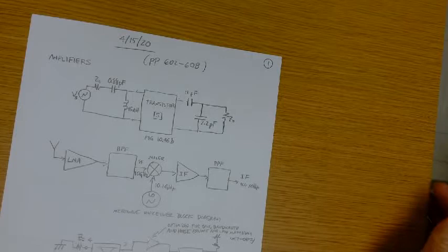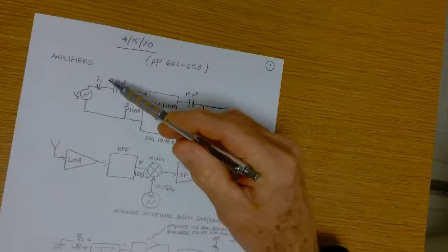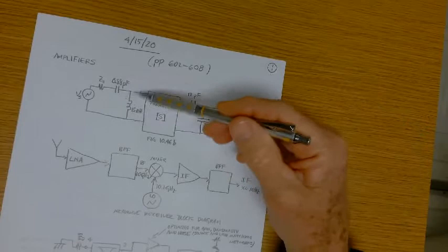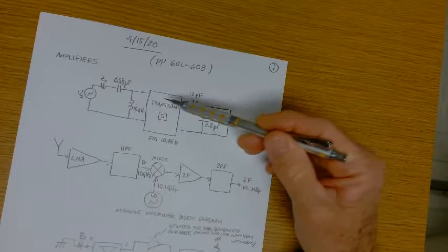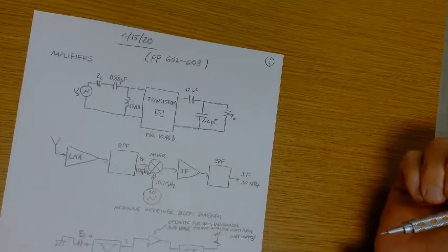So we discussed all that and we did an example. You need to be able to design this input and output network. The design is the same procedure at least, but the reflection coefficient looking into the output and the input are different and so that's why these elements are different, obviously.